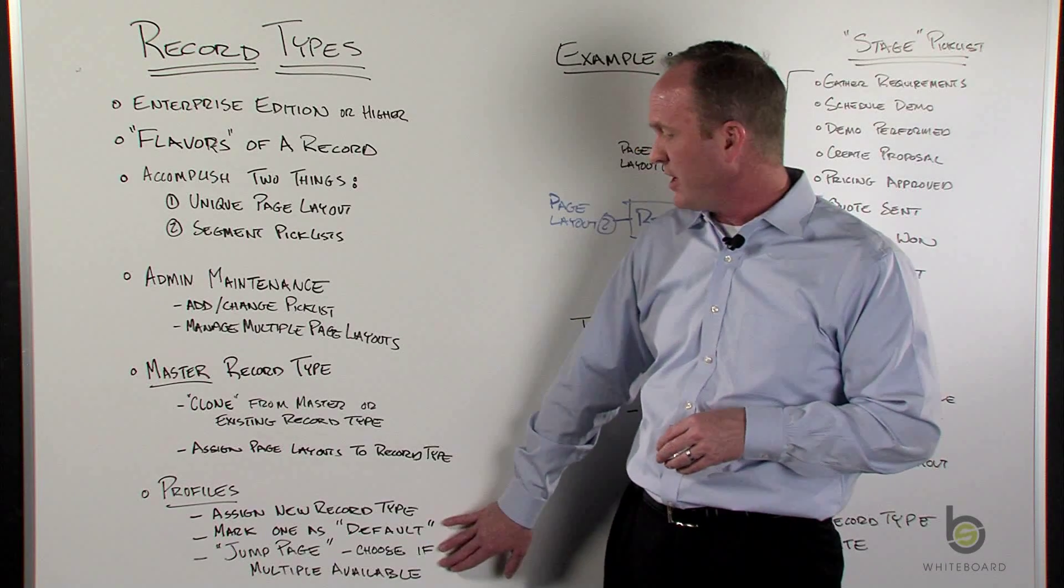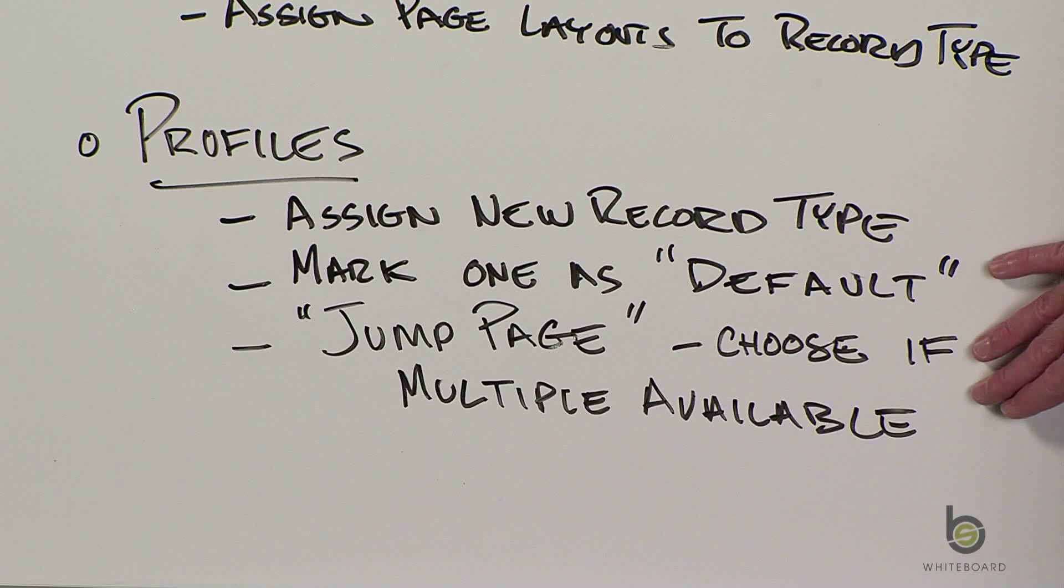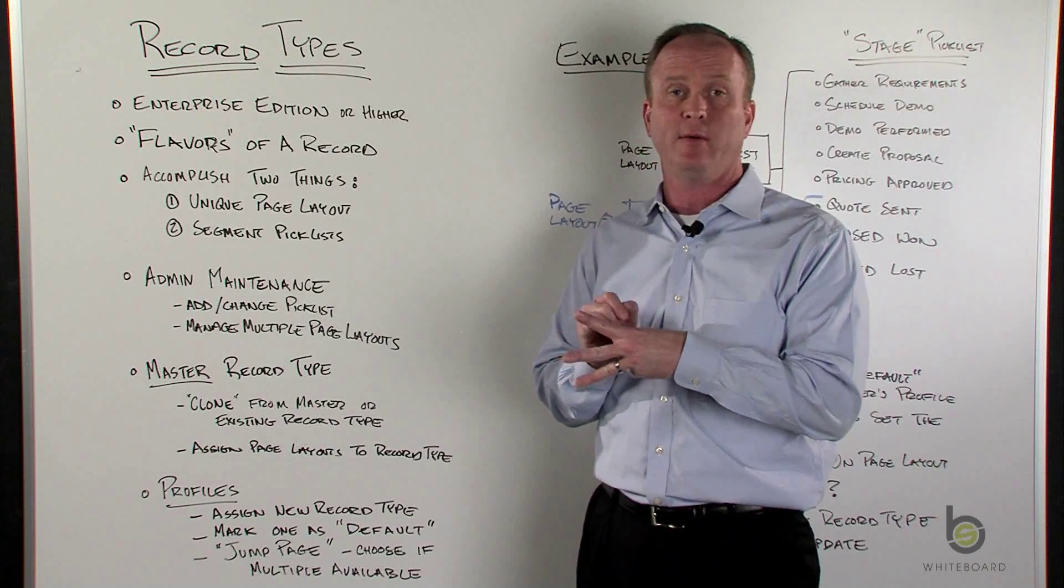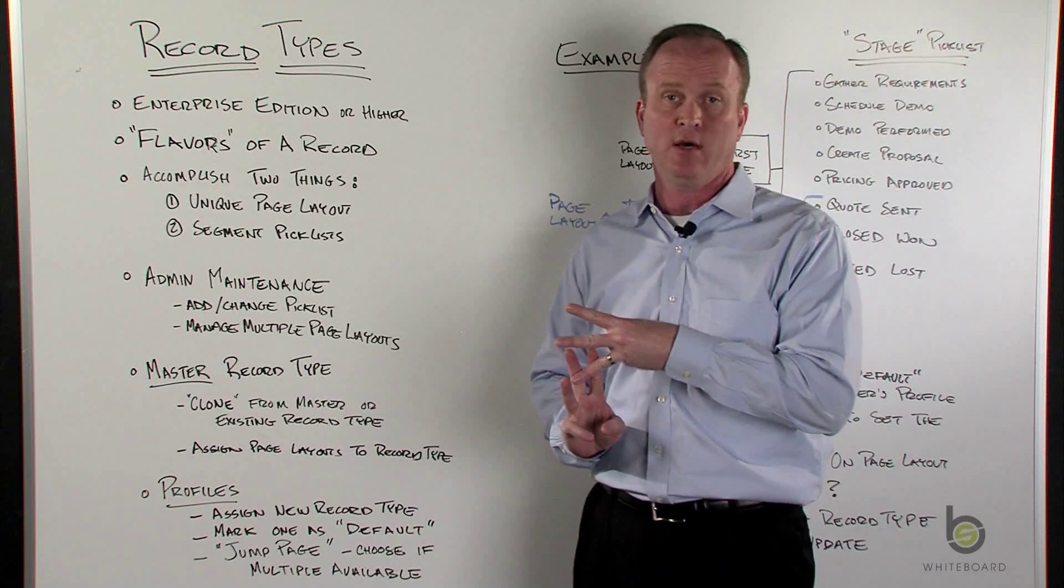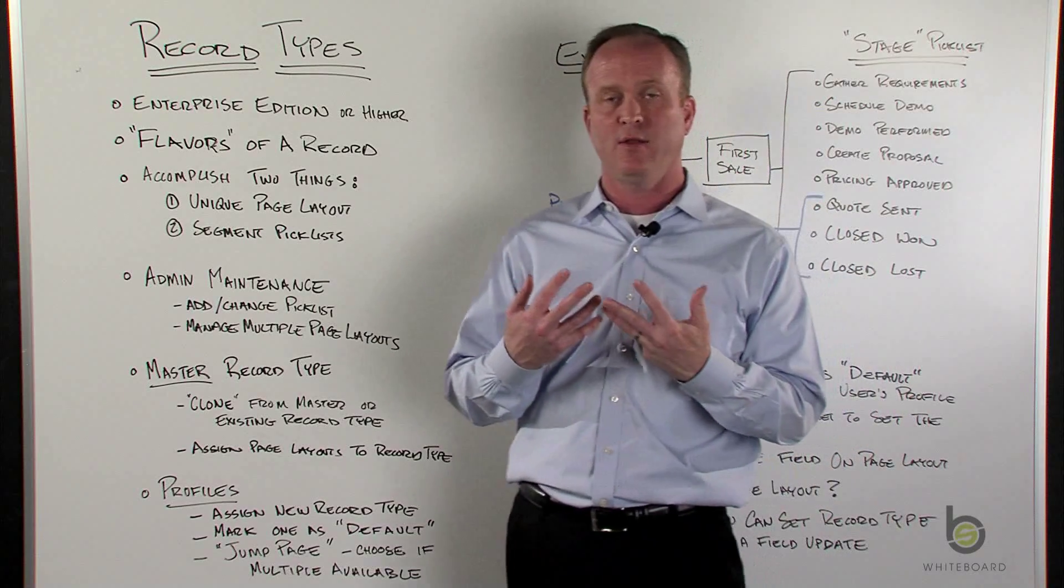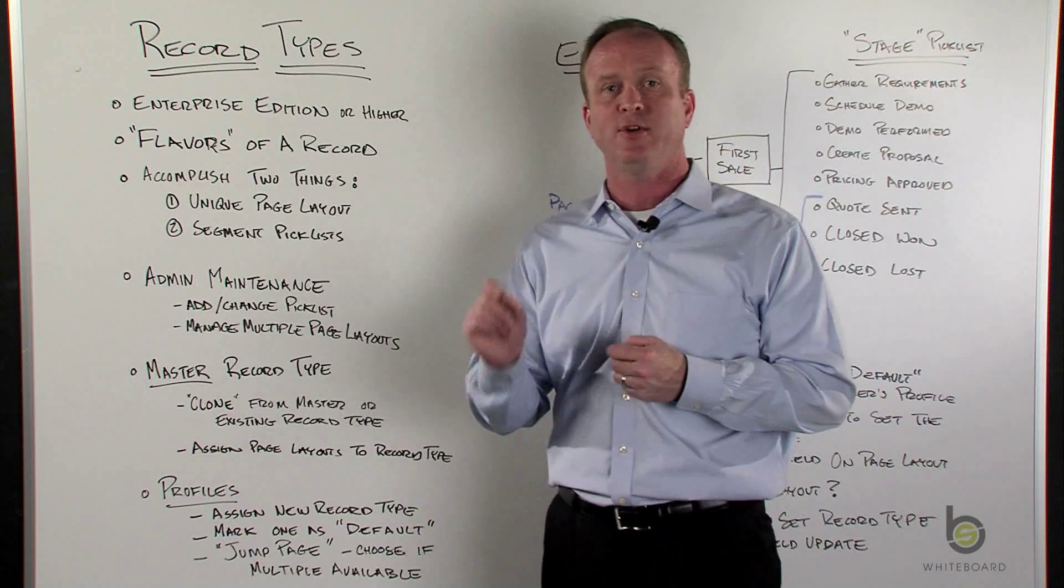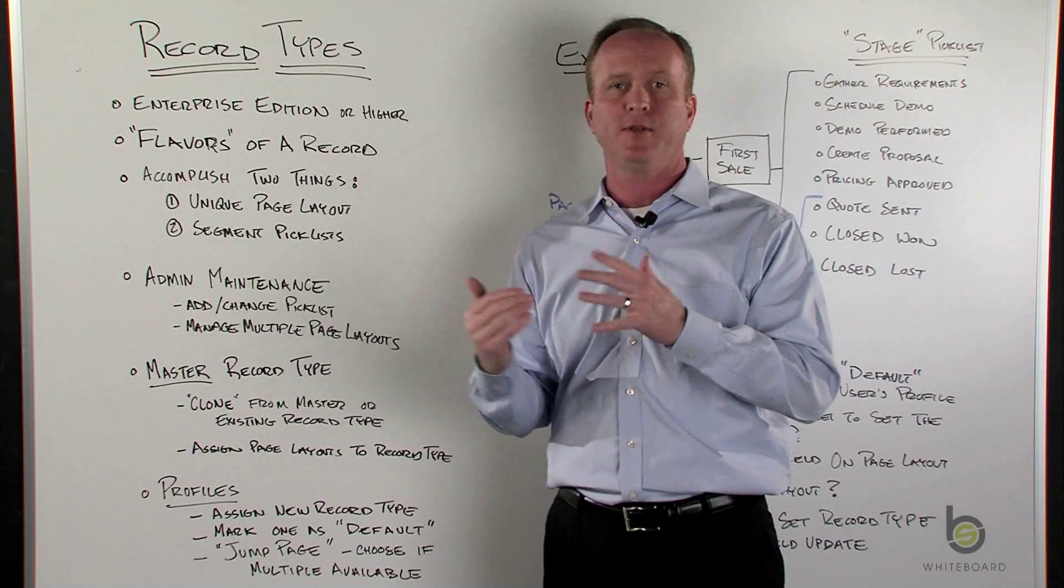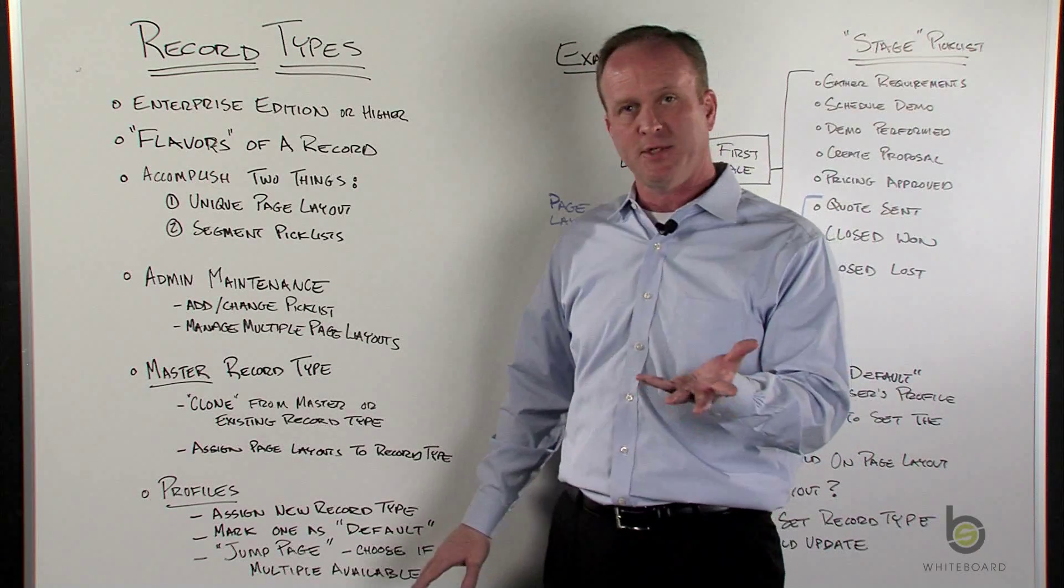You also have to define on the profile which record types that profile is allowed to access. So if we had three record types, one profile might have access to one layout, another profile might have access to all three of those record types. If a user has more than one record type assigned, you have to denote in the profile a default, which is the first option they have available.